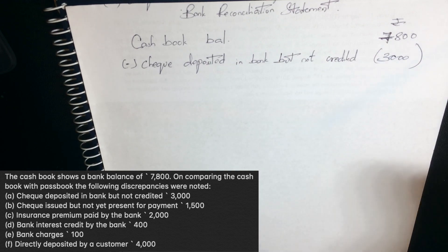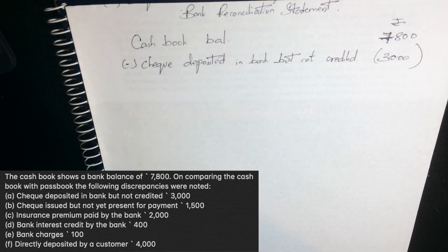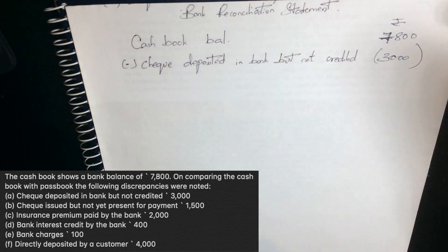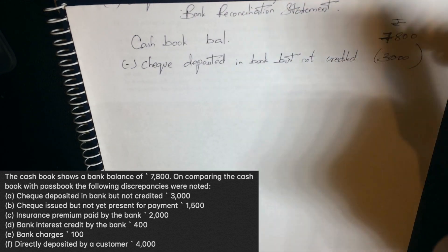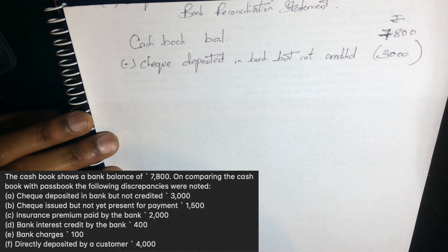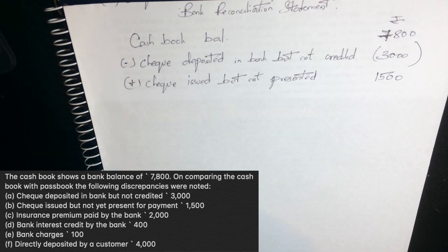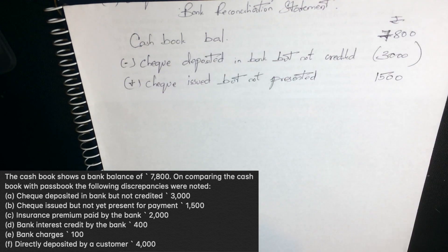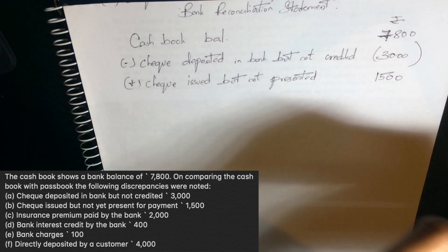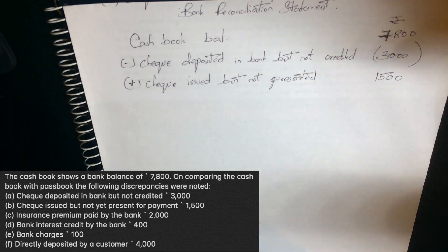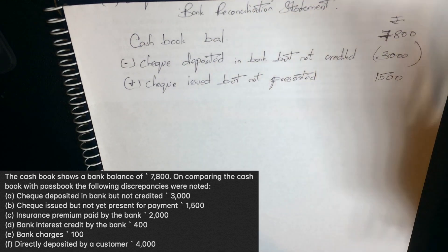Next statement: 'Check issued but not yet presented for payment.' When we issue a check, we deduct the amount from the cash book immediately. However, the bank has not yet paid it because the check hasn't been presented. For example, if the check amount is $100, the cash book has already deducted it, but the bank statement still shows the higher balance. So in the pass book, we add back this amount.